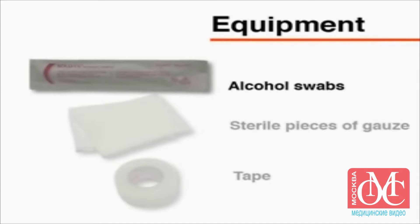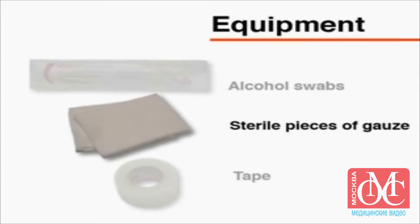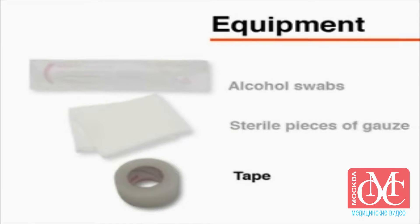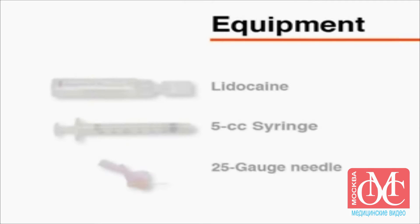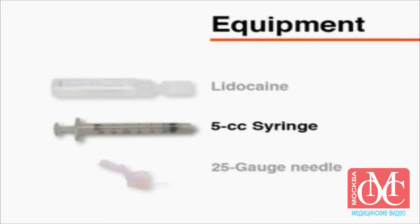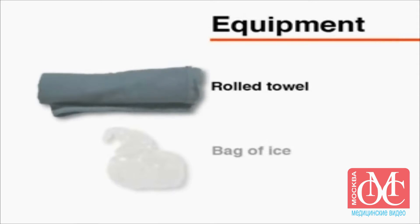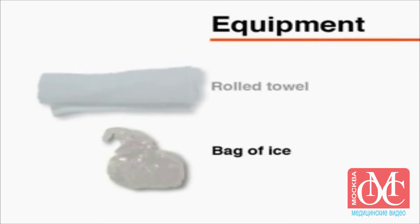You will also need the following: alcohol swabs, sterile pieces of gauze, tape, non-sterile gloves and a non-sterile gown, 1% lidocaine without epinephrine for local analgesia, a 5cc syringe with a 25 gauge needle, a small rolled towel to place under the wrist, and a bag of ice in which to transport the sample to the lab if required.